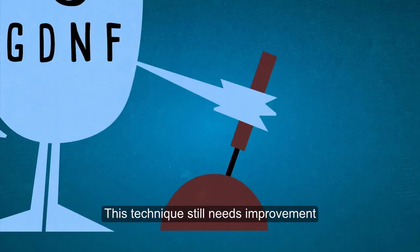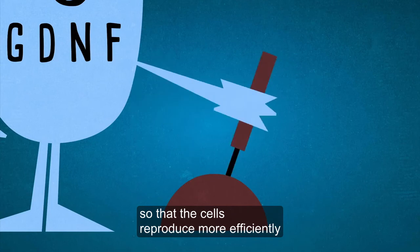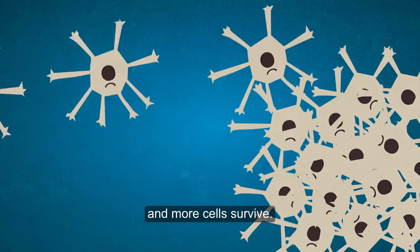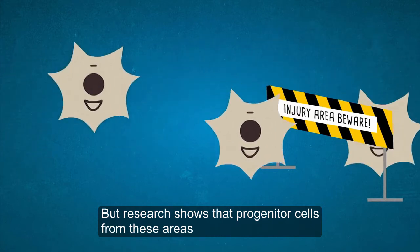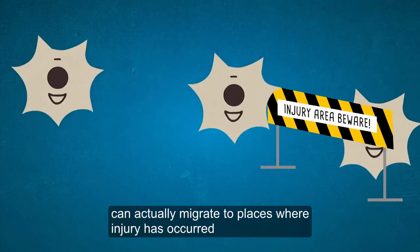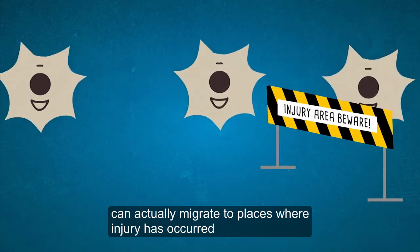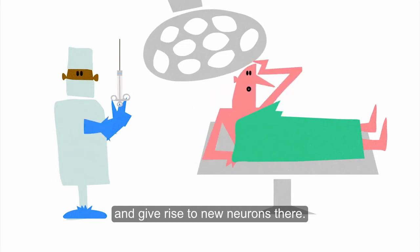This technique still needs improvement so that the cells reproduce more efficiently and more cells survive, but research shows that progenitor cells from these areas can actually migrate to places where injury has occurred, and give rise to new neurons there.